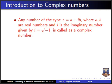Let us start with Introduction to Complex Numbers. Any number of the type Z equal to A plus iB, where A and B are real numbers and i is the imaginary number given by the formula i equal to square root of minus 1, is called a complex number.